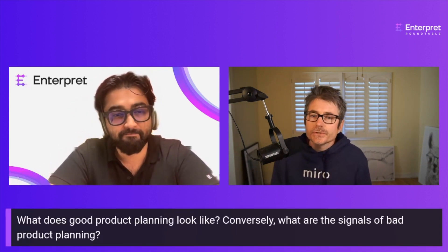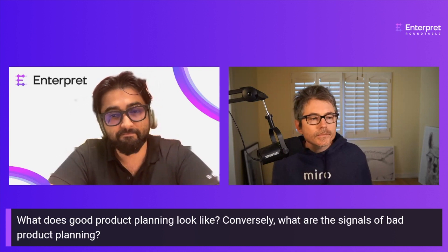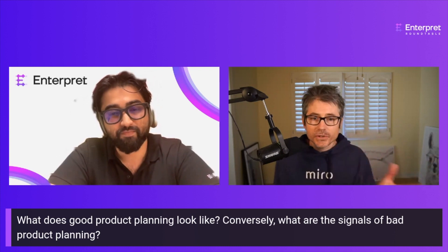Alright, with that out of the way, let's dive in. Very timely topic: product planning. The first thing I want to identify is what good and bad looks like — what are the signals of good product planning, and conversely, what are some clear signals of bad product planning, and how can teams identify that?